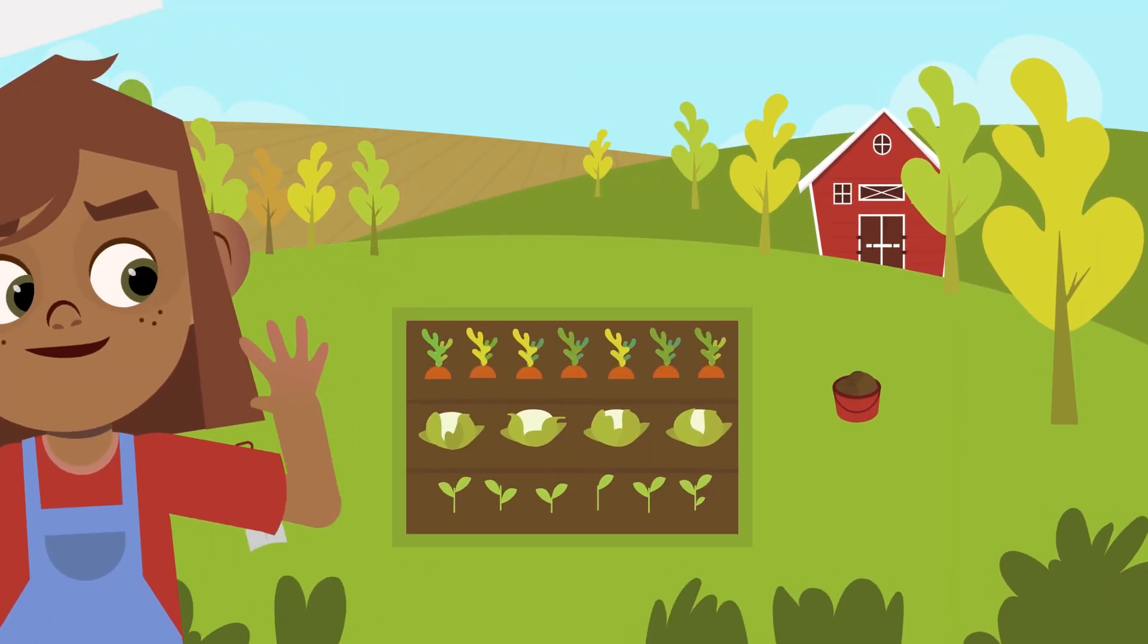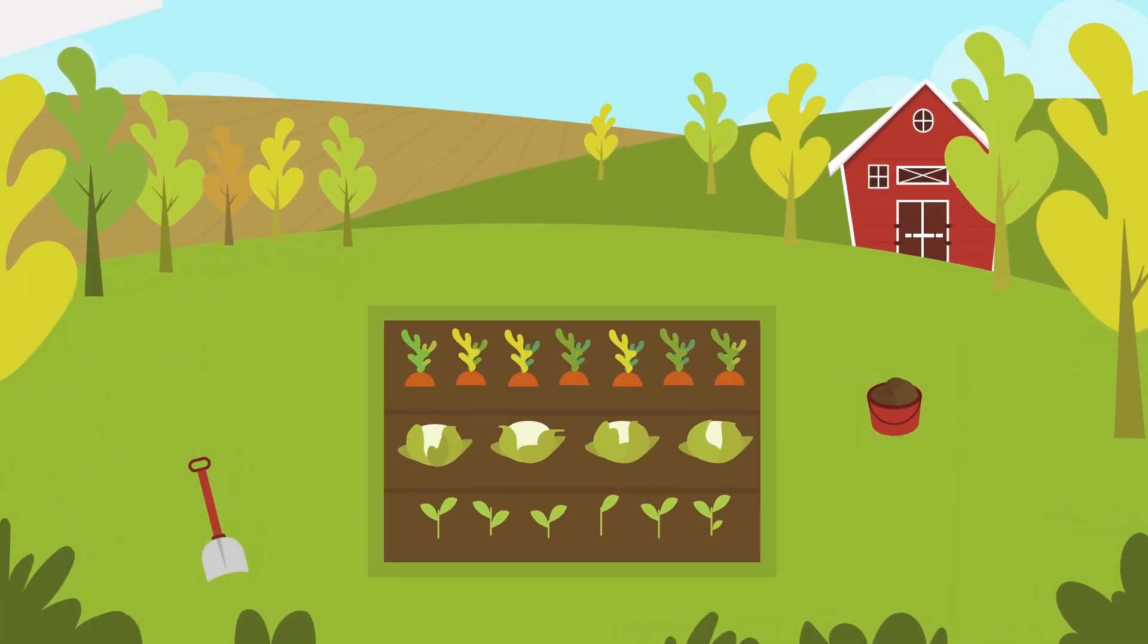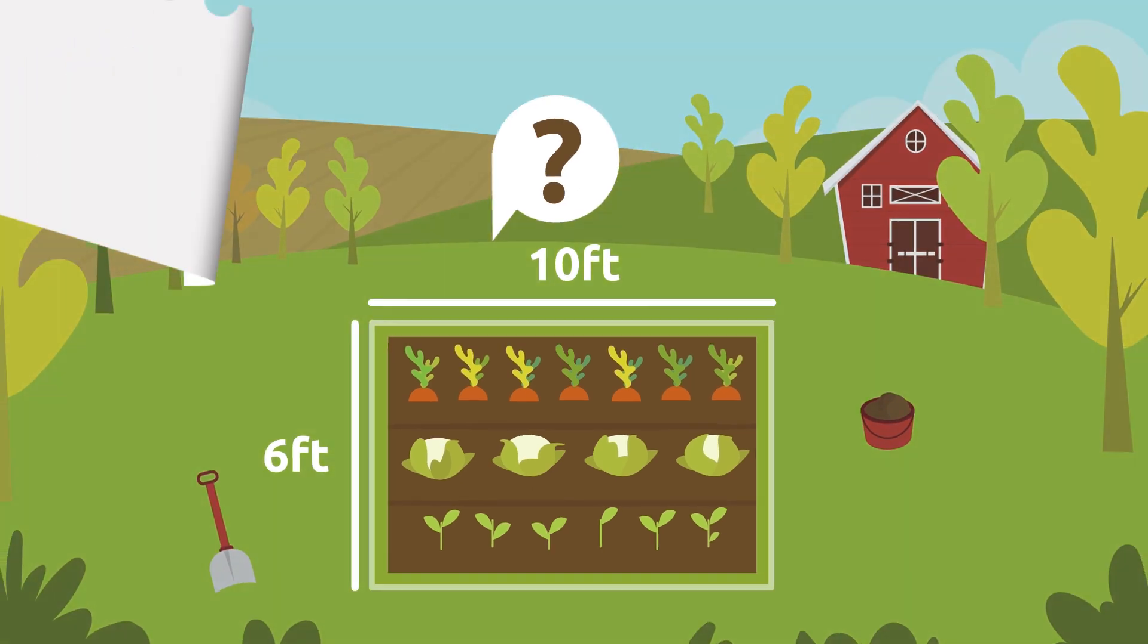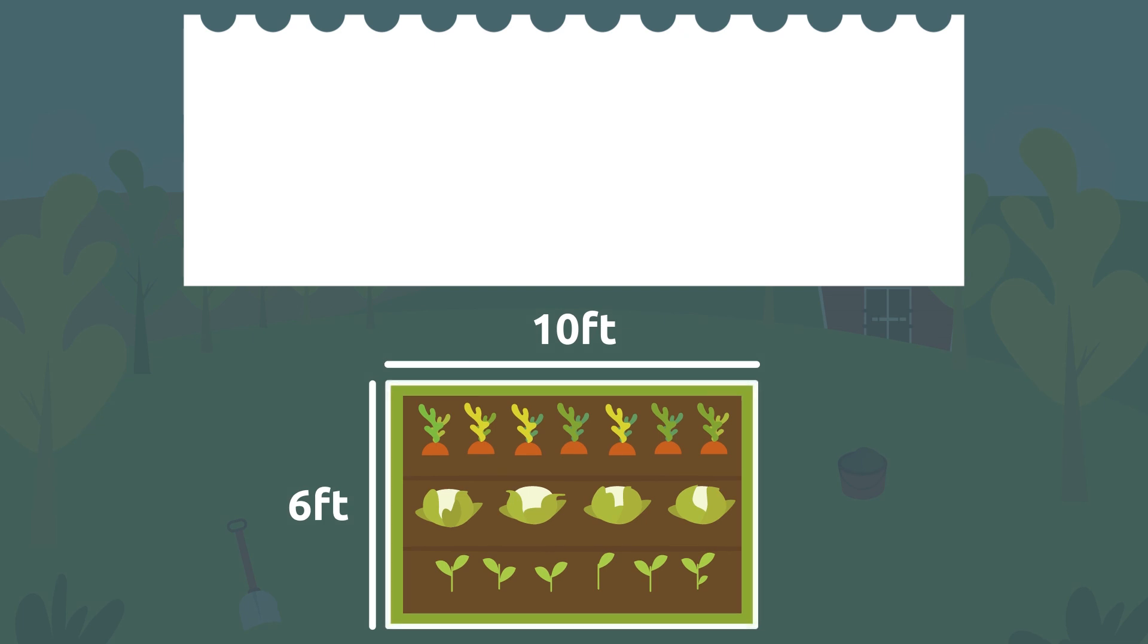Anna wants to put a fence around the vegetable garden she built in her yard. The space has a rectangular shape and measures six feet wide and ten feet long. How many feet of fence material does she need to buy? To figure it out, we need to find the perimeter of this rectangle.